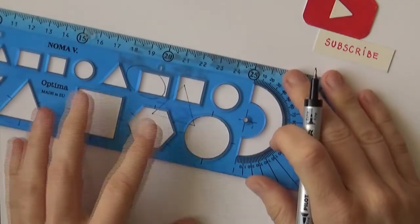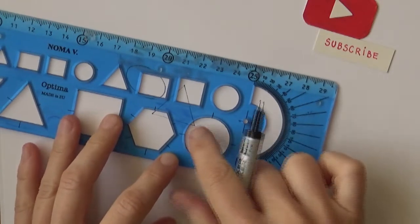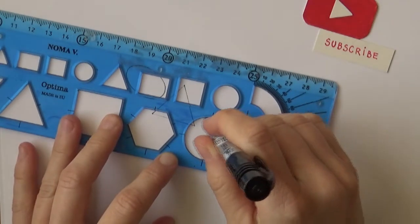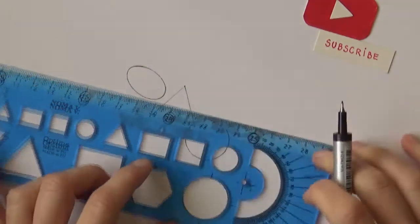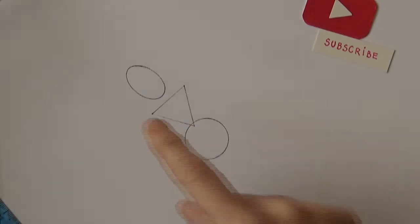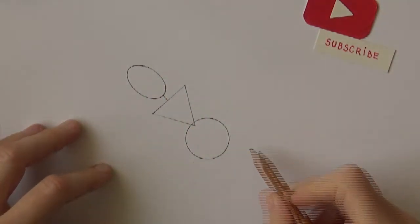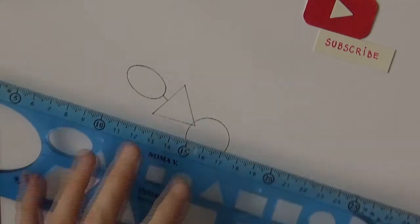For the hips, we'll use the large circle and we'll overlap it so that a little bit of triangle is inside the hip. Now you've got the bases, and you can decide on how you would like to have the tail.